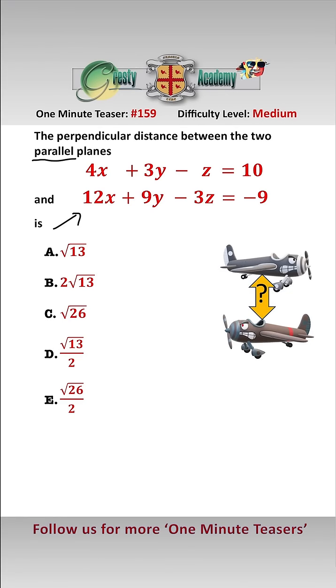We're told that the planes are parallel, and we can see that when we divide the second plane by three, we get 4x + 3y - z = -3. The coefficients of x, y, and z are the same on both planes.